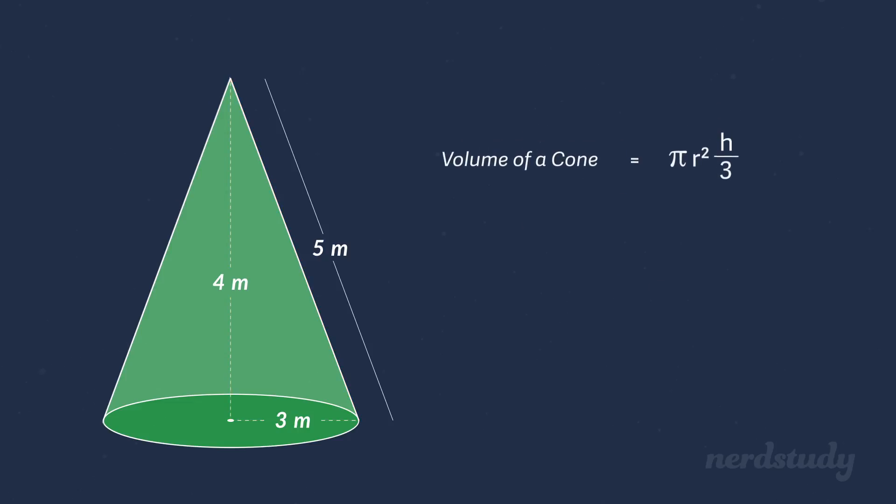Now we can get the volume of this cone easily since we have all the values for our formula. If we plug them in, we get pi times 3 squared times 4 over 3. This equals roughly to 118.435 meters cubed.